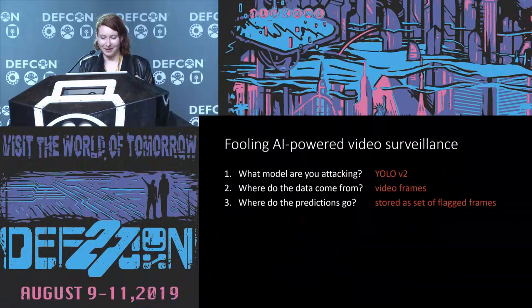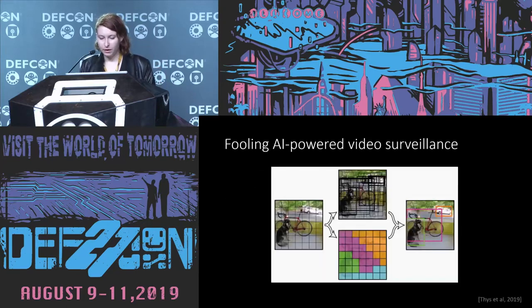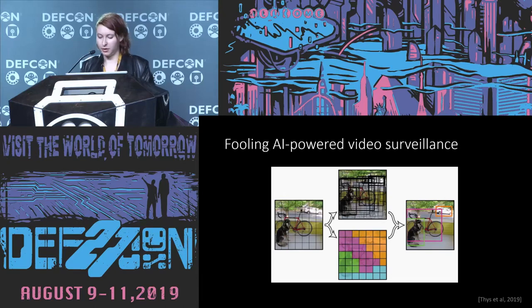We're focusing on the detection system because the further down the pipeline you go in terms of data processing, the more processed the data gets and the harder it is to figure out what's actually going on. With this example, we're going to attack the YOLO model — which stands for You Only Look Once, which I did not name. The data comes from video frames since we're pulling in data from cameras, and the predictions are stored as a set of flagged frames forwarded to the recognition system off-site. YOLO essentially cuts the image into a grid, and for each box in the grid computes a score for how likely it is that that box contains an object and approximately which object is in that little box. There's a one-object-per-box limitation, but it's still pretty popular for many deployed systems doing face detection.